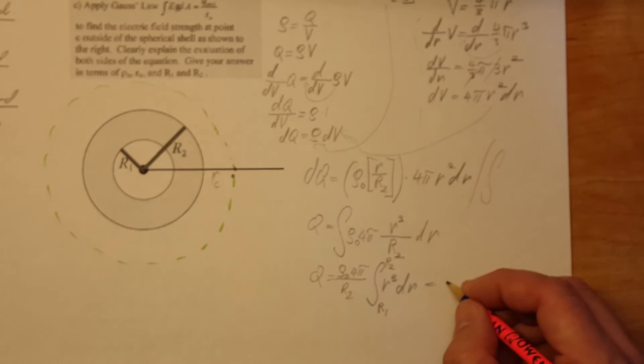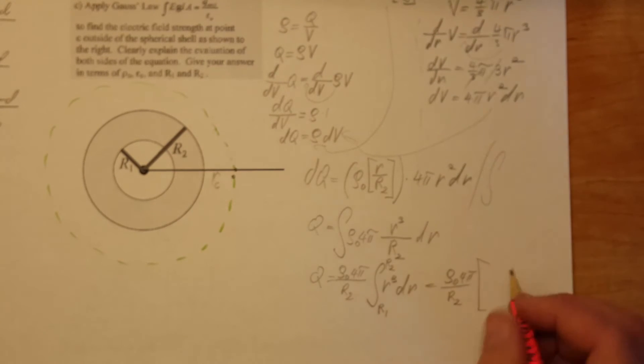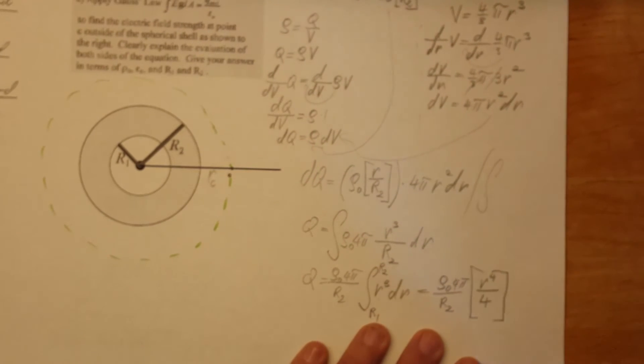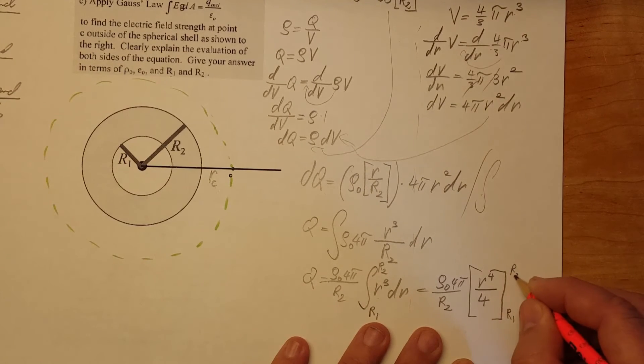Now we're going to solve in the front. Rho 0, 4 pi over big R2. That doesn't change. Integral of R cubed is R to the 4th divided by 4. And our limits of integration are R1 to R2.